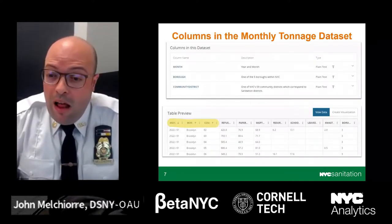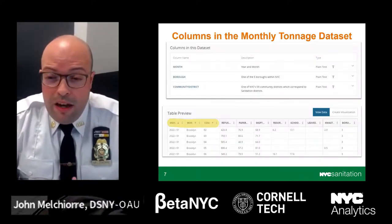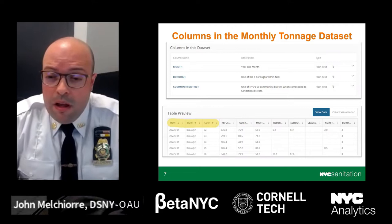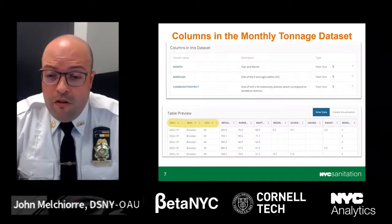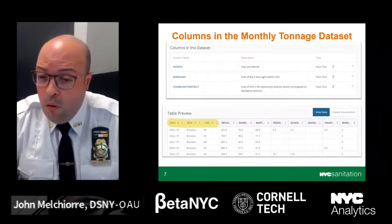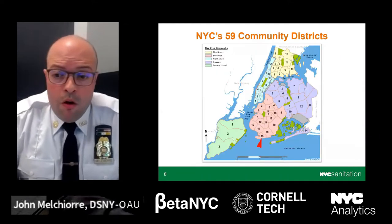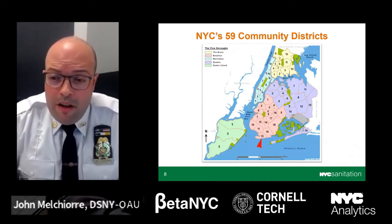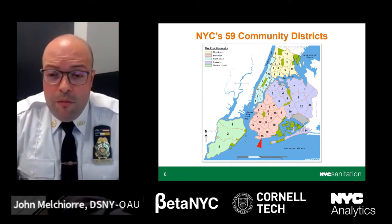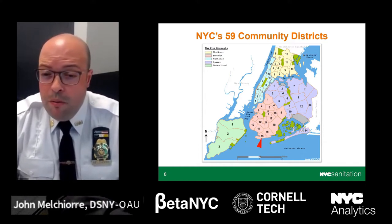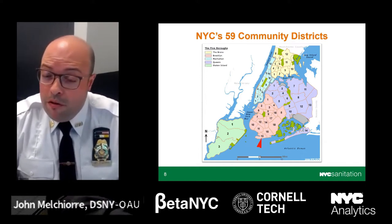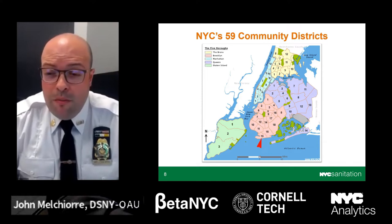The first three columns of the monthly tonnage data set, highlighted in yellow, contain the year and month, the borough and borough name, and the New York City Community District, which also corresponds to the sanitation district. New York City is divided into 59 geographic community districts, each one having a respective community board. There is a maximum of 250,000 people per community district.